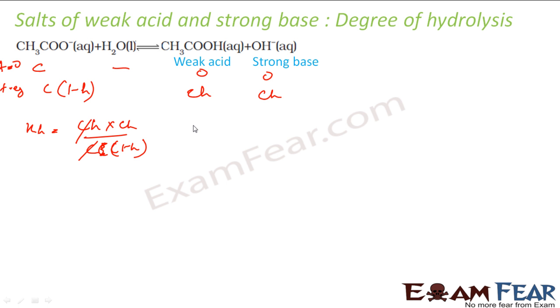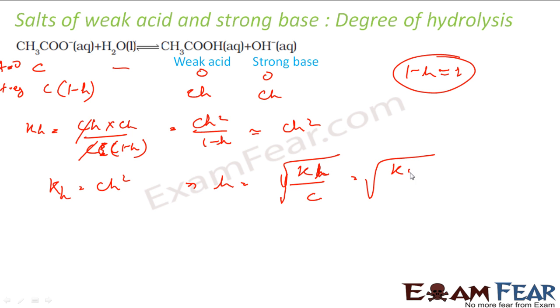This gets cancelled. I get CH² by 1 minus H. 1 minus H is almost equal to 1 because hydrolysis is very very less, so almost equal to CH². Kh is nothing but CH². So H is nothing but degree of hydrolysis, square root of Kh by C. This is my degree of hydrolysis. Kh is nothing but Kw by Ka into C. That is how you find the value of degree of hydrolysis for a weak acid and strong base.